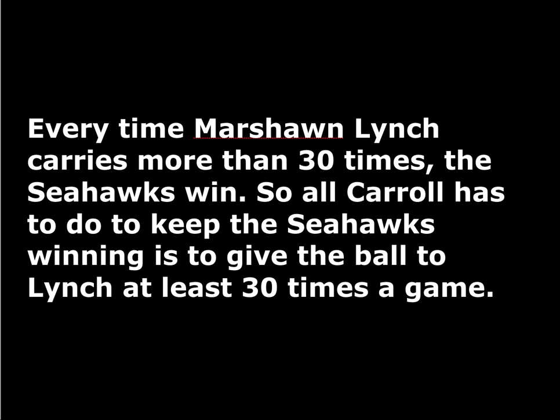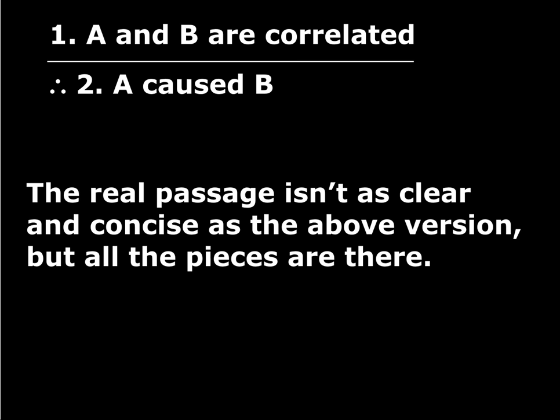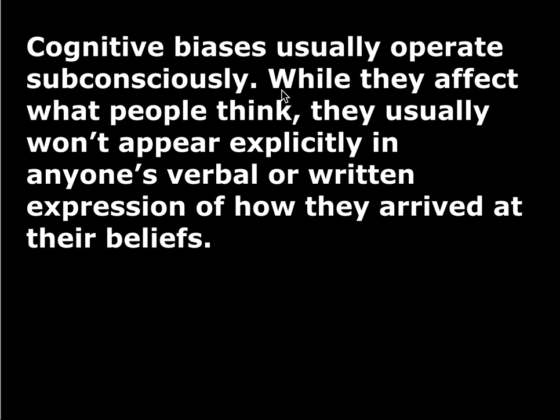They're aware that they're reasoning — they're just not aware that it's fallacious. People will actually go from 'A and B are correlated' to 'A caused B' and they'll just say that. Cognitive biases are different. They're usually operating sort of under the radar of conscious awareness. People aren't aware of the fact that they're subject to these biases.